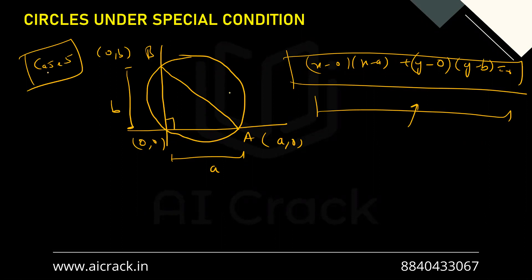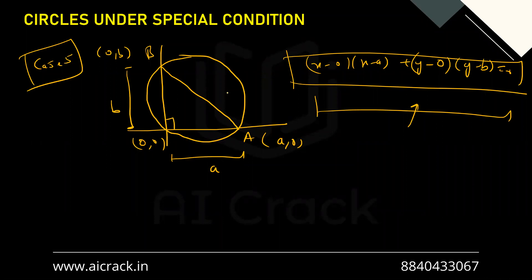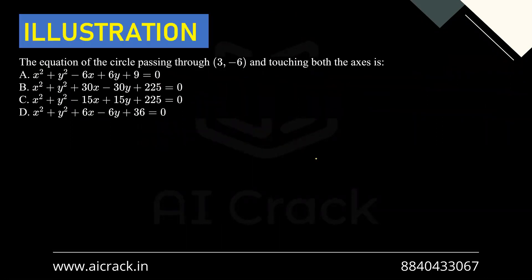You don't really need to memorize these cases — it's for demonstration of how to approach finding the equation of a circle when certain conditions are given, whether it's touching the x-axis, y-axis, both axes, passing through the origin, or the intercept case. The key principle is that you need a minimum of three conditions to find the equation of a circle.